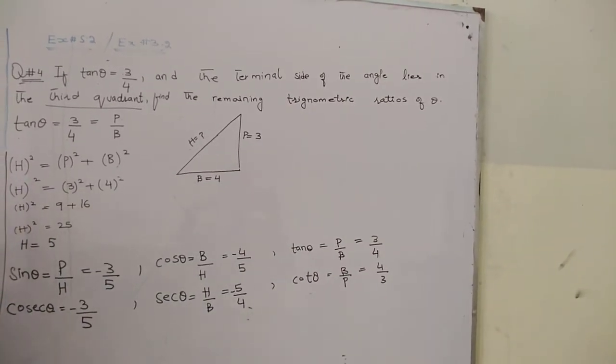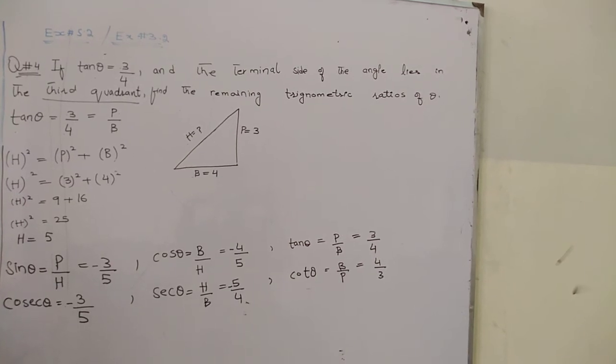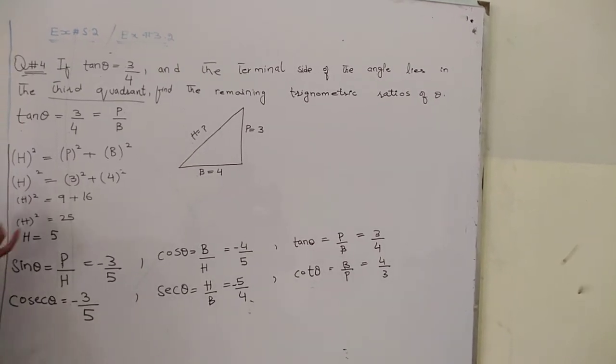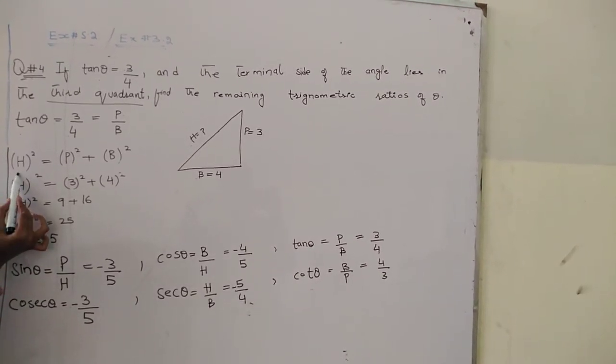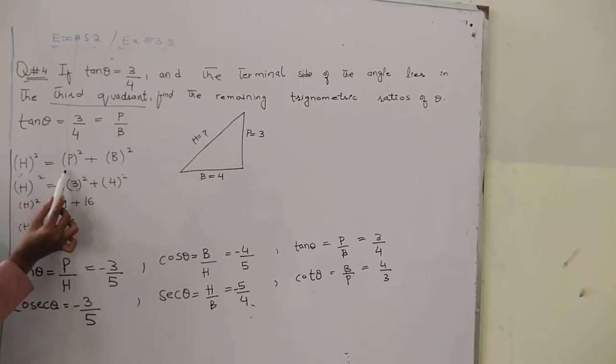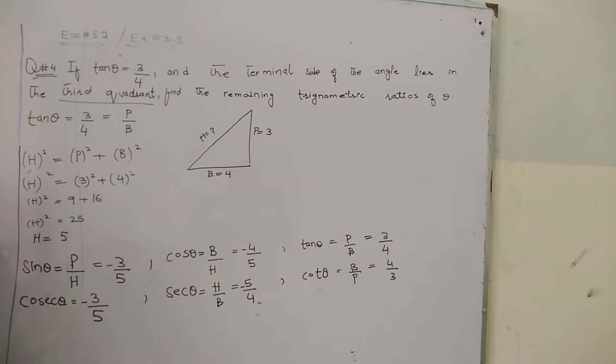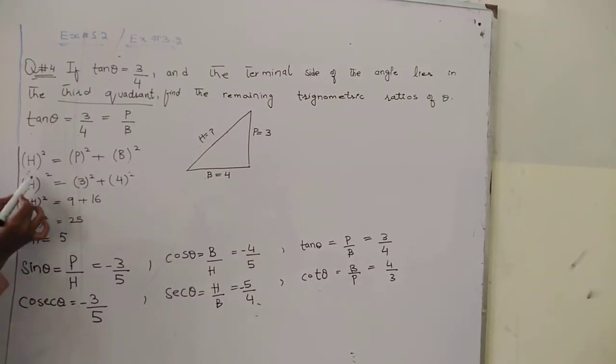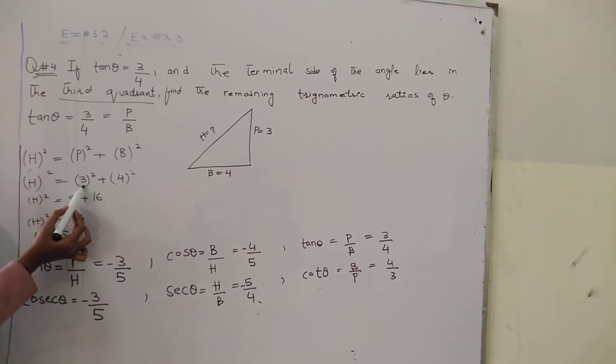The hypotenuse will be unknown. We'll use the Pythagorean theorem. Hypotenuse squared is equal to perpendicular squared plus base squared.